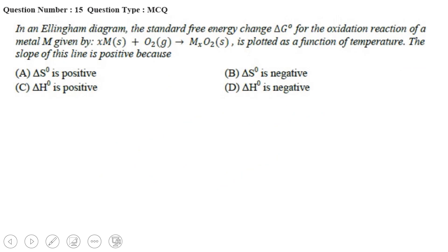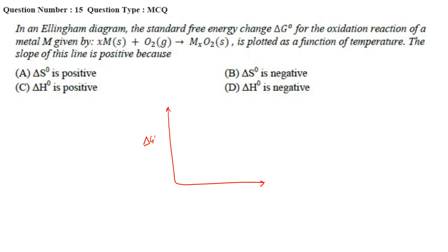Now let's move to the next question. In an Ellingham diagram, the standard free energy change ΔG° for the oxidation reaction XM + O₂ → MXO₂ is plotted as a function of temperature. The slope of this line is positive. The reaction given is: XM (solid) + O₂ (gas) → MXO₂ (solid), and we need to understand why the slope is positive.